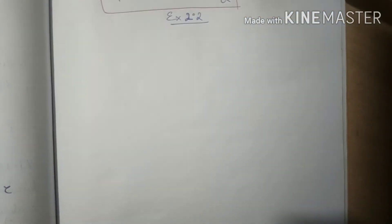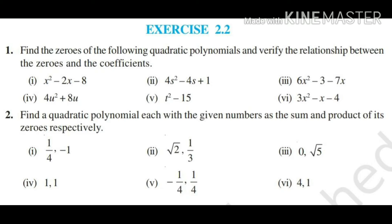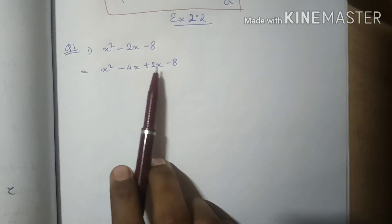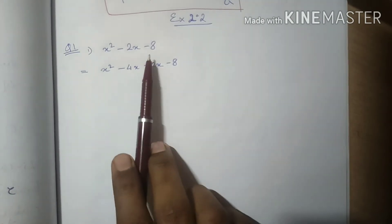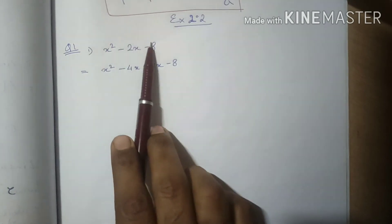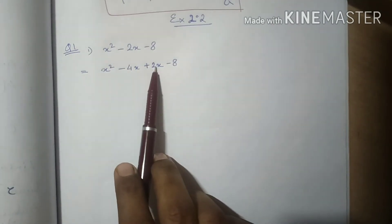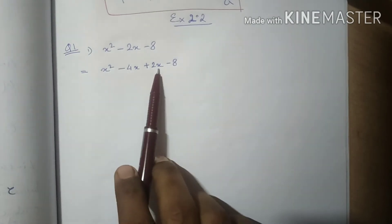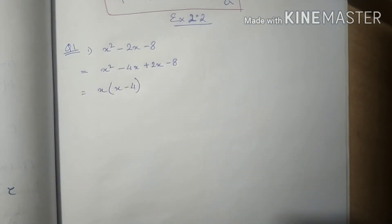Now let's start Exercise 2.2. First we need to find the zeros of the given quadratic polynomial, then verify the relationship between zeros and coefficients. The method is splitting the middle term, which we've been doing since class 8. You split the middle term into two numbers such that their product equals the product of the first and last terms, and their sum gives the middle term.